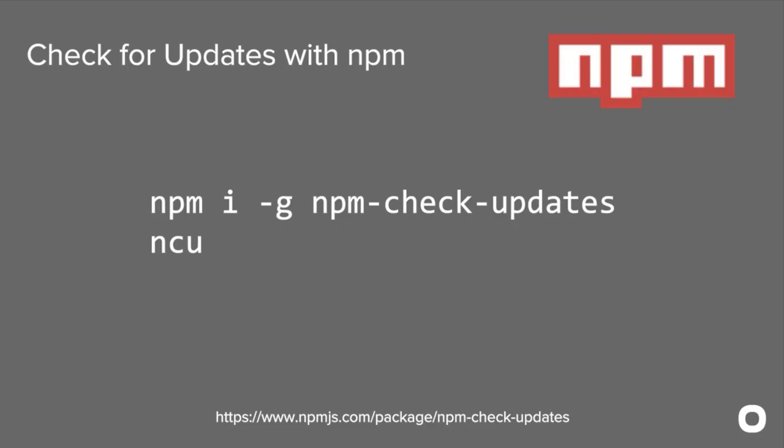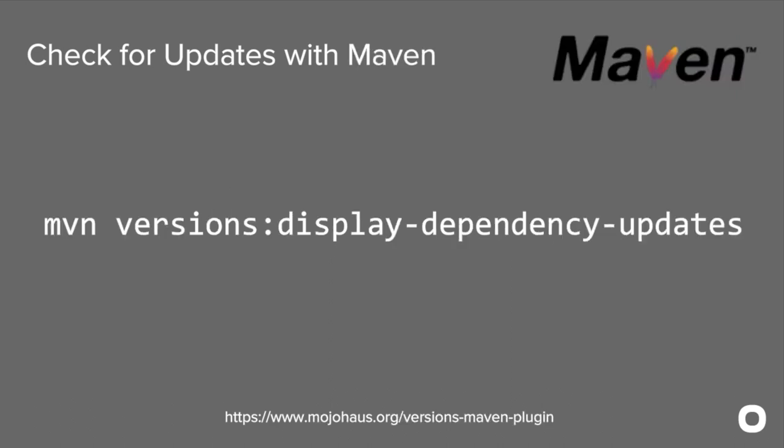There are great tools to help. In the Node community, you can use NCU to list Node packages that need updating. For Maven, there's the versions plugin — the display-dependency-updates goal shows a report, and there's another goal to apply those changes. Gradle has a similar tool as well.